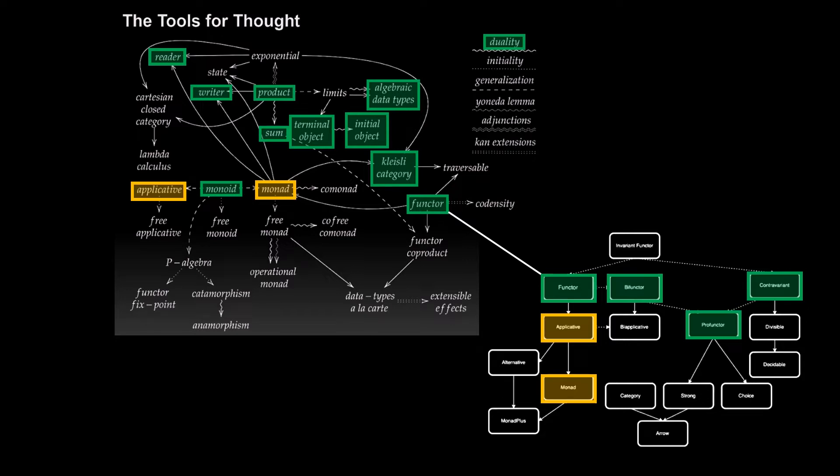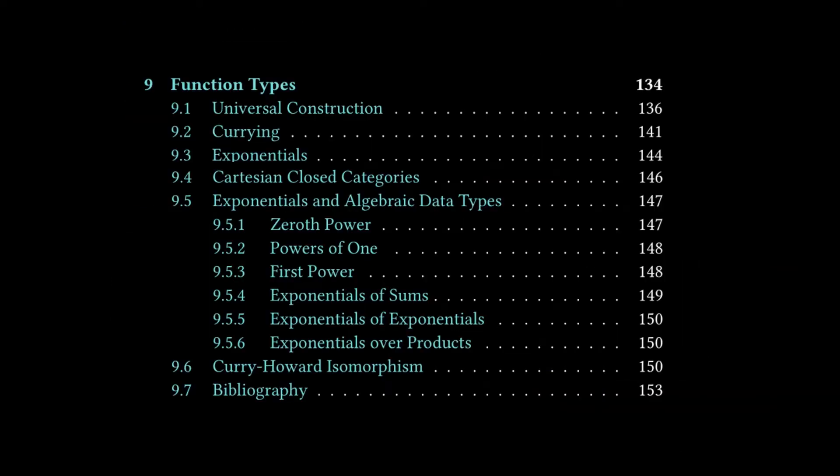In Chapter 9, the two things on this diagram or composition of diagrams that are covered are Exponentials and Cartesian Closed Categories. Moving on to our Table of Contents, you can see there are a lot of things covered in this chapter.